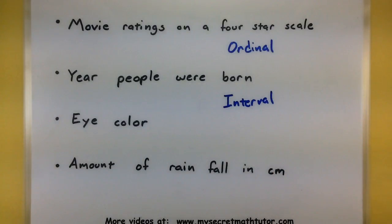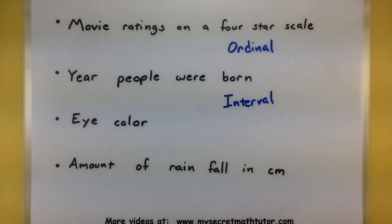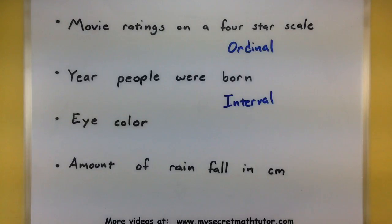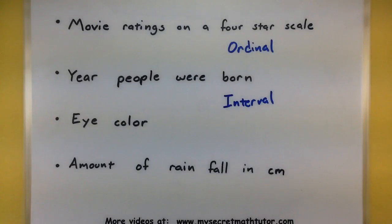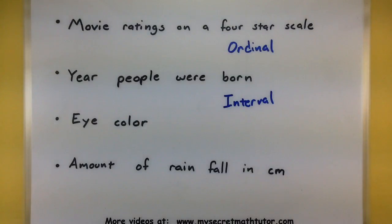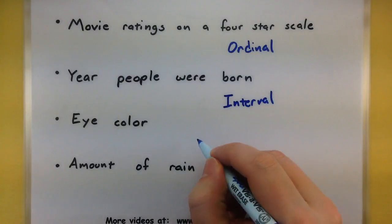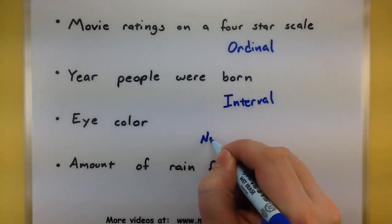Moving on: eye color. Maybe I'm collecting people's eye color — they could be blue, brown, or hazel. Starting with the first question: can we order this? Unfortunately the answer is no. It doesn't matter if I put brown eyes first followed by blue eyes, or hazel eyes first — none of those orderings really matter. This is just data that consists of labels, categories, and names. So we will say it is at the nominal level.